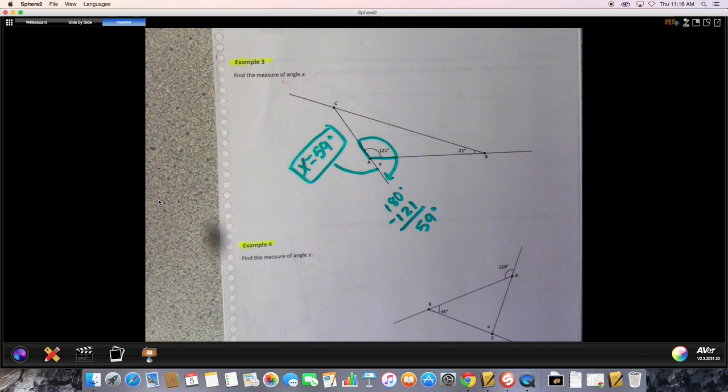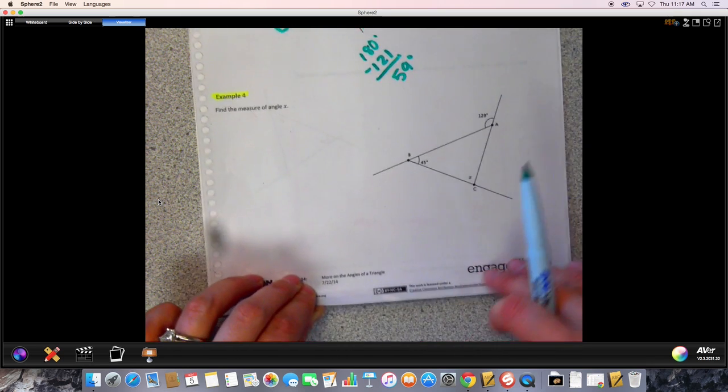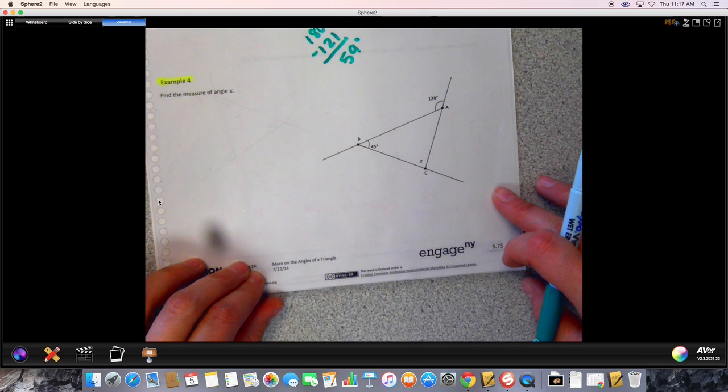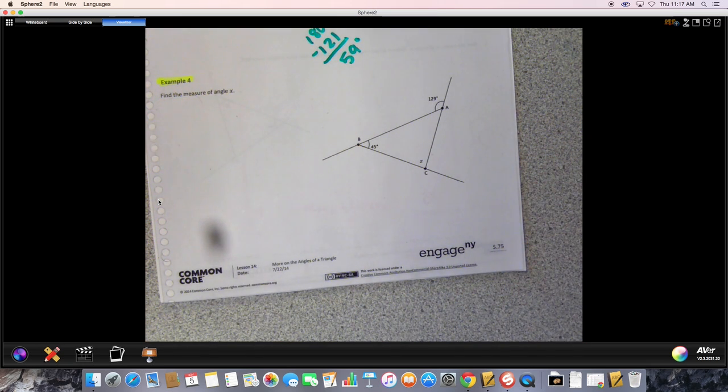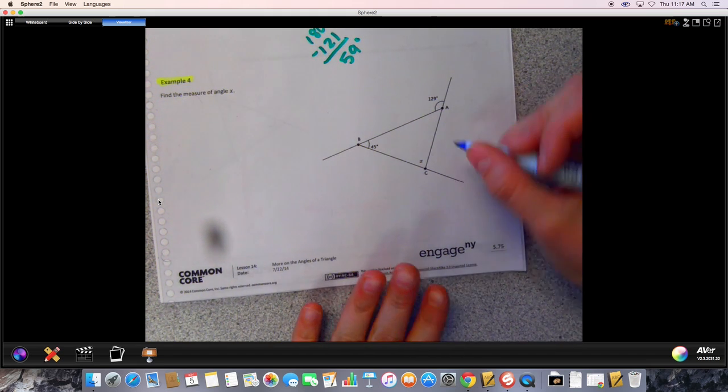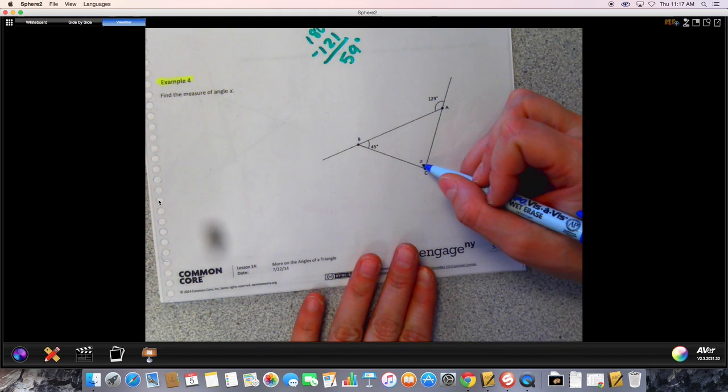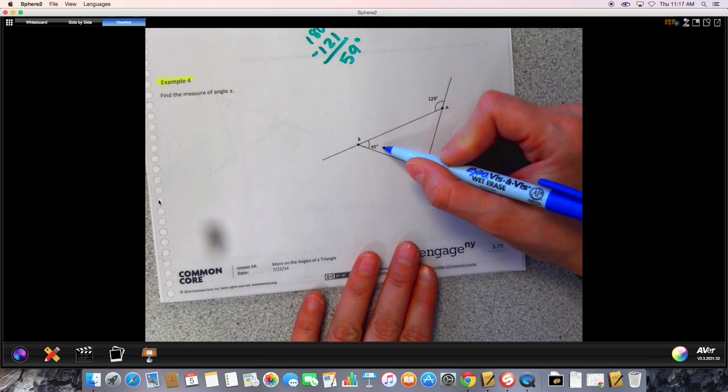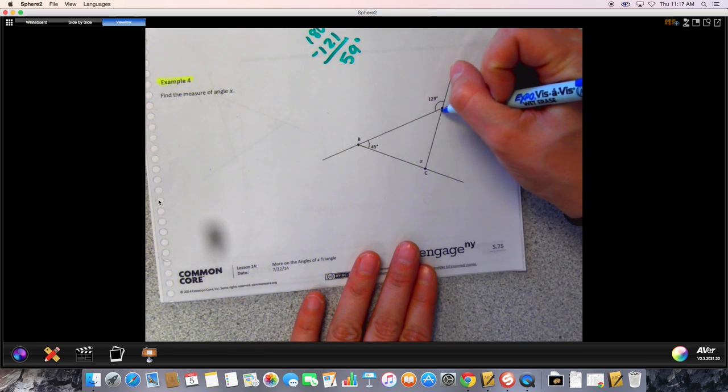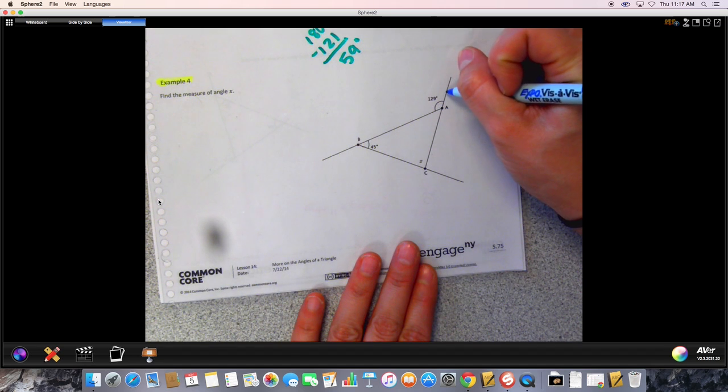The last example we're going to do today is Example 4. For this lesson, again, a very similar looking problem except the angle measures are different than the ones before and our x once again has moved locations. So this time is the first time we see x actually inside the triangle here at angle c. We know angle b is 45 degrees. We also don't know angle a, but we do know the exterior of angle a is 129.